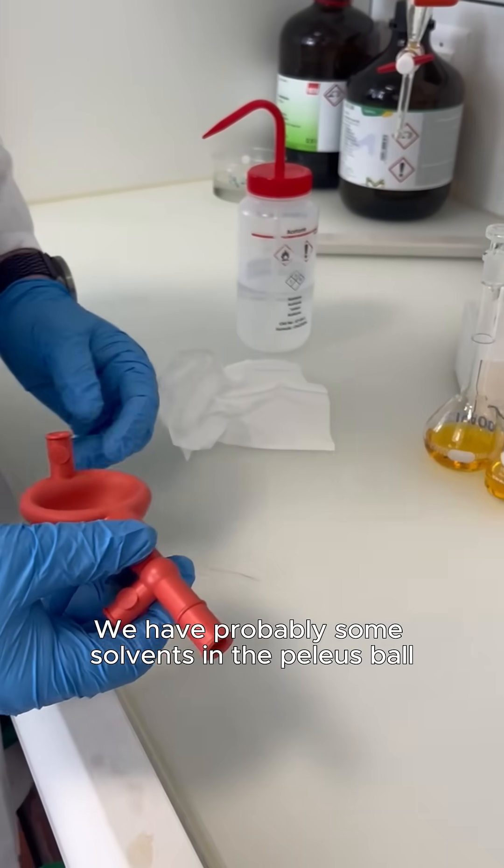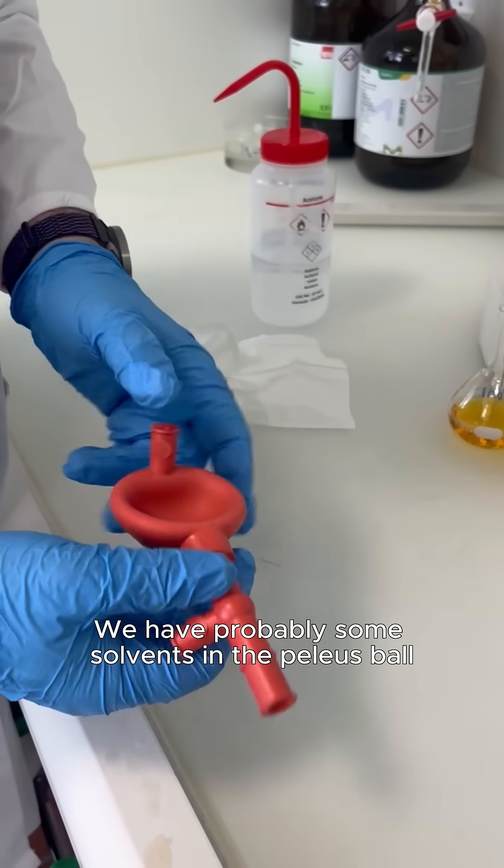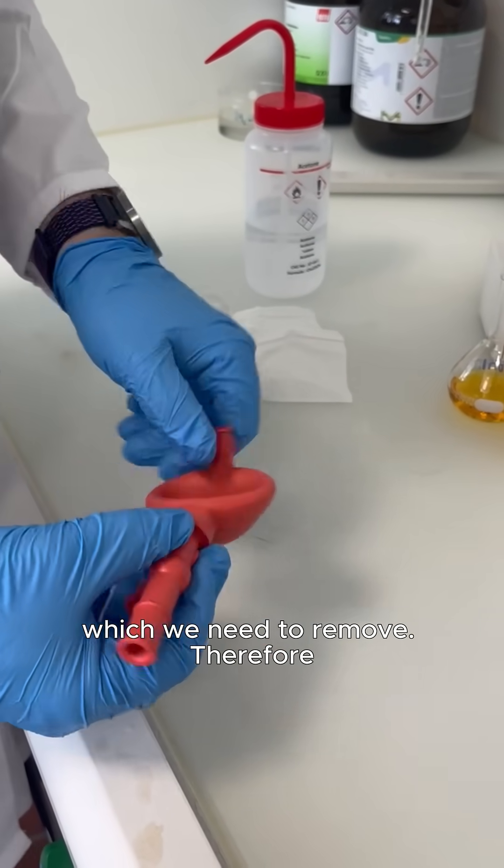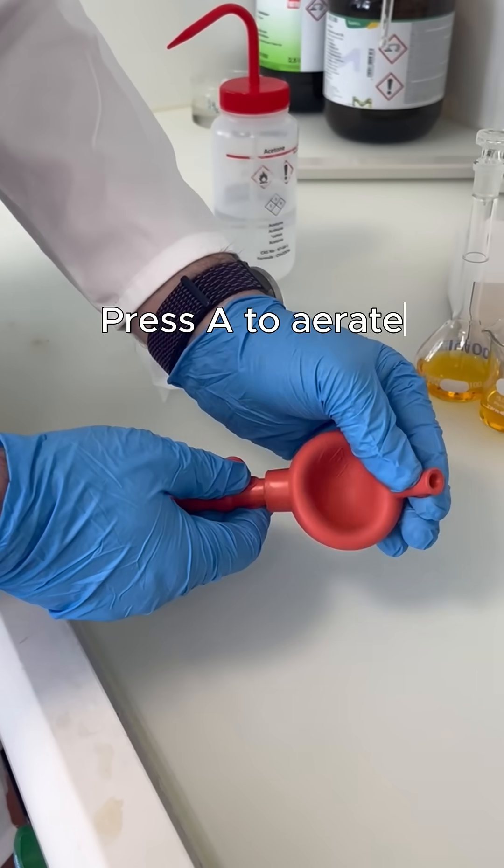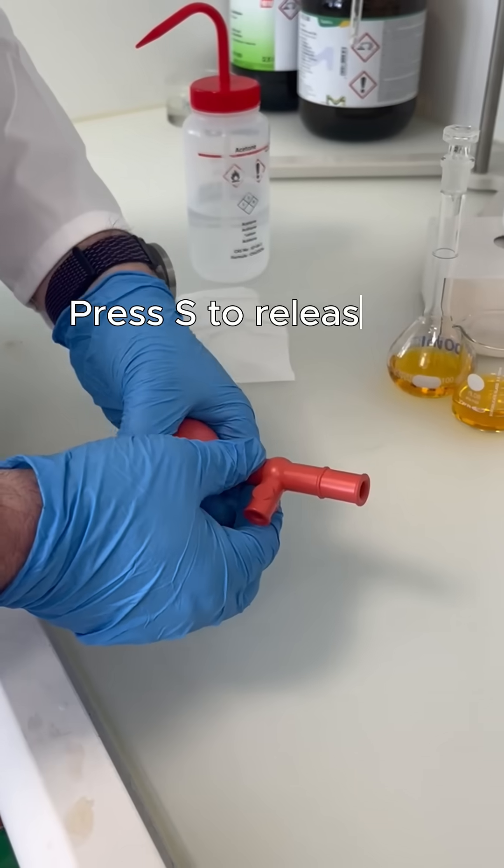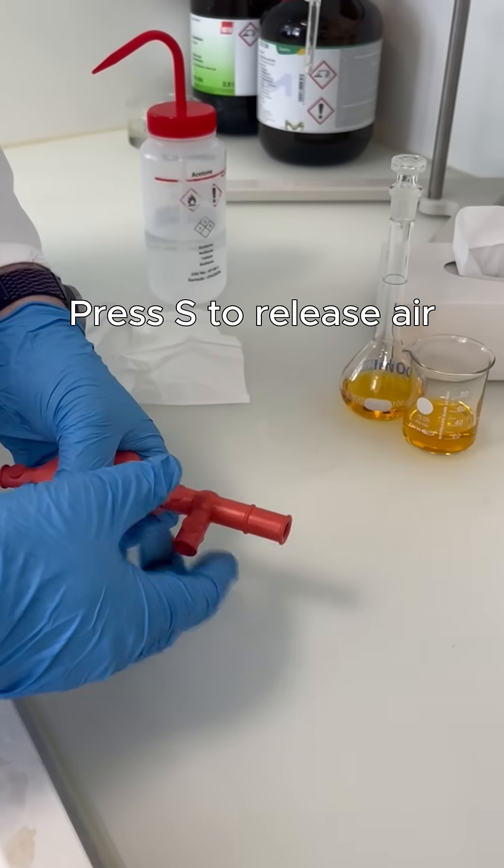We probably have some solvents in the Palaeus Ball which we need to remove. Therefore we press A, aerate the entire Palaeus Ball, and remove the air again via the S.